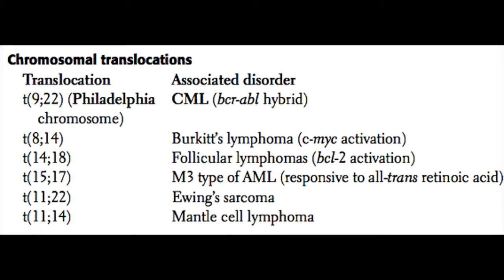The 8;14 translocation in Burkitt's lymphoma causes activation of c-myc, which is an oncogene that should not be constitutively active. When it is, it causes uncontrolled cell proliferation. The 14;18 translocation is that of follicular lymphoma, where the issue is an overactive BCL-2.